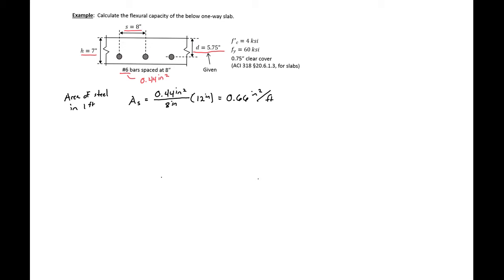We can now make sure that our section is tension controlled, so we can find our ρ, which will be 0.66 inches squared per foot, divided by BD. So our B, we have a 12 inch strip and our D is 5.75. So we find our ρ is 0.0096.